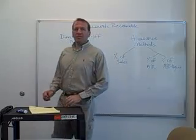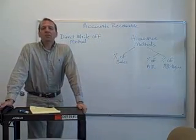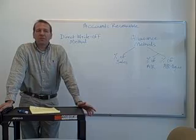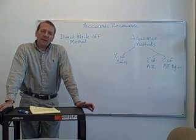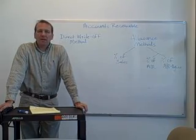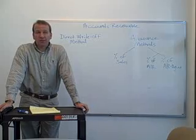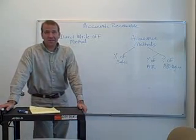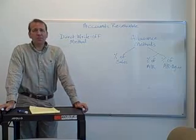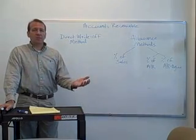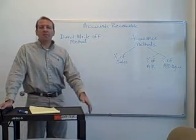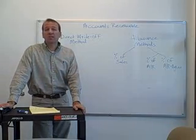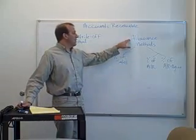Today we're going to be looking at accounts receivable. Let's assume that we have $200,000 at the end of the year in accounts receivable. Now do you think we would get paid all of that money? More than likely some of those accounts receivable are going to be bad, meaning the customer isn't going to pay us, especially in today's economy. So we don't want to put just $200,000 on the balance sheet — we want to have something set aside for those customers that aren't going to pay us. And that's called the allowance method.